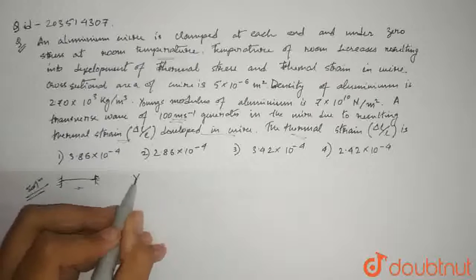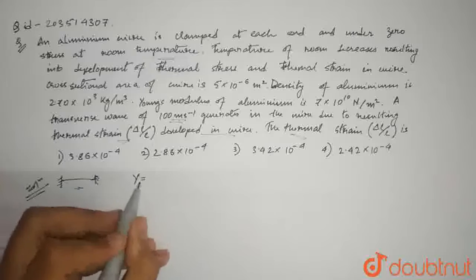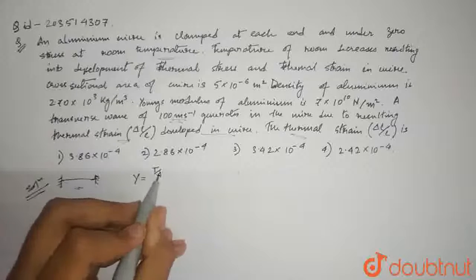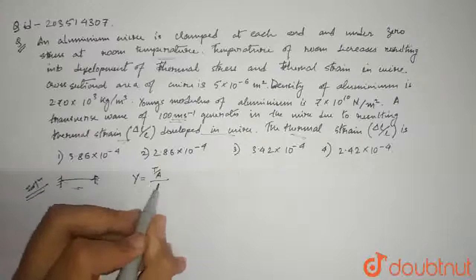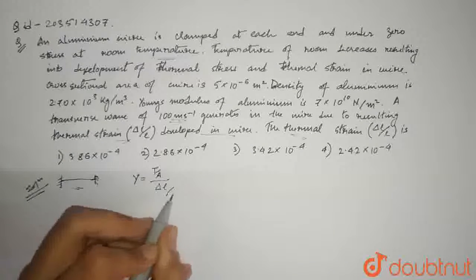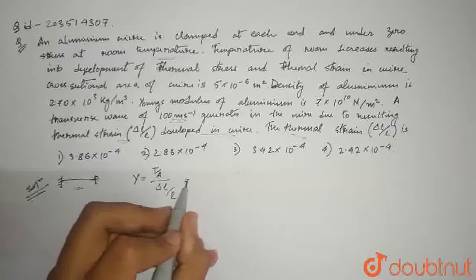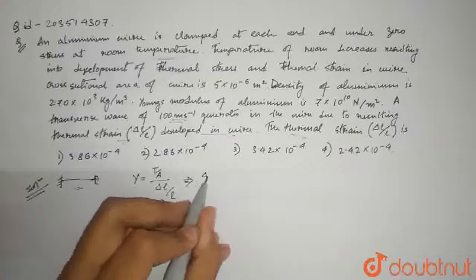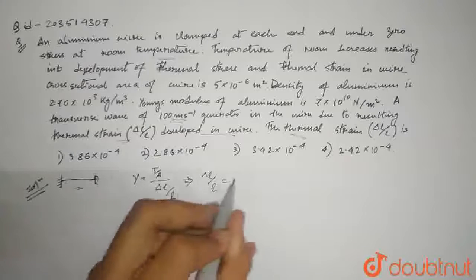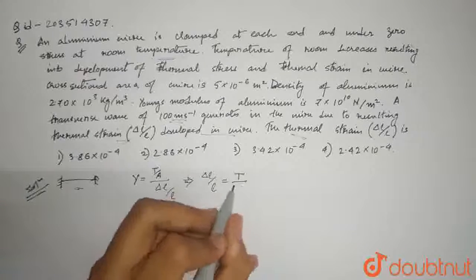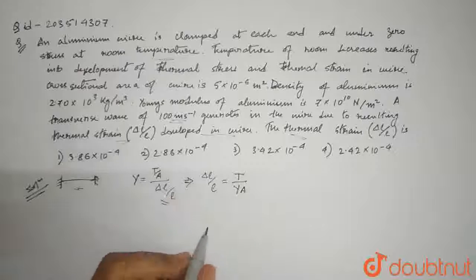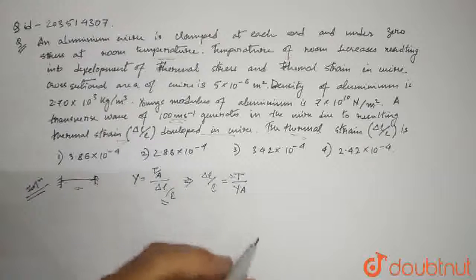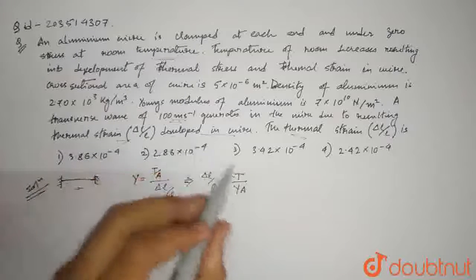We can write the formula Y, which is Young's modulus. T force is the tension force and strain is del L by L. Now we are going to get del L by L, so del L by L is equal to T by Y A. Now we are going to find T.